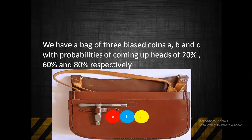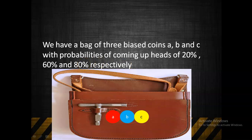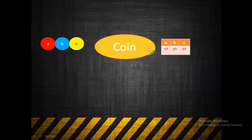So the bag comprises three coins A, B, and C. Coin A has a head probability of 0.2, coin B has a head probability of 0.6, and coin C has a head probability of 0.8. All three coins are equally likely to be drawn from the bag, so the probability of drawing any one coin — A, B, or C — is 1/3.